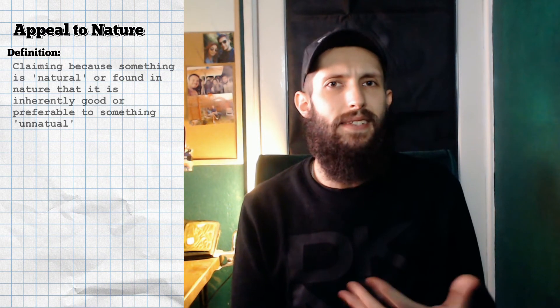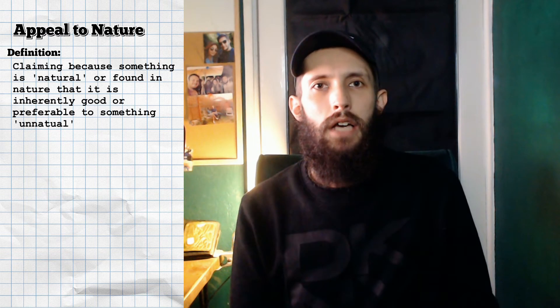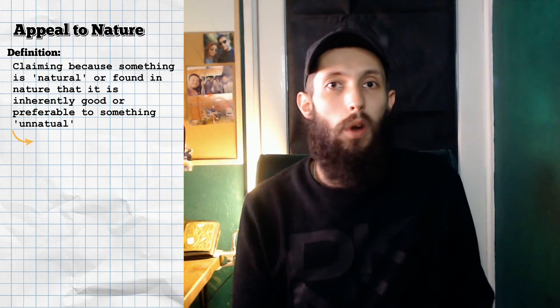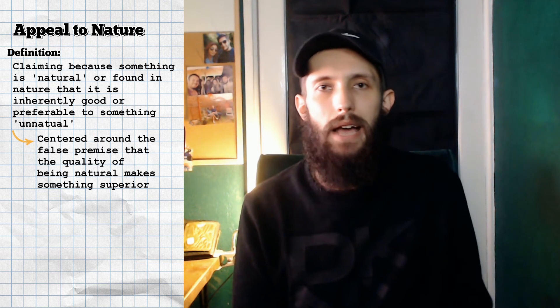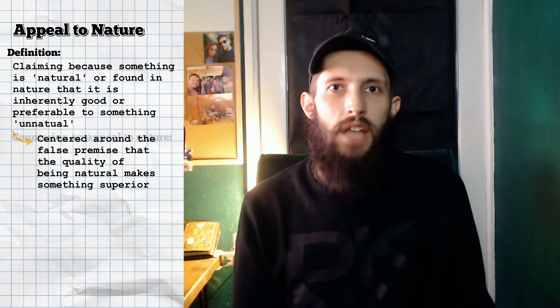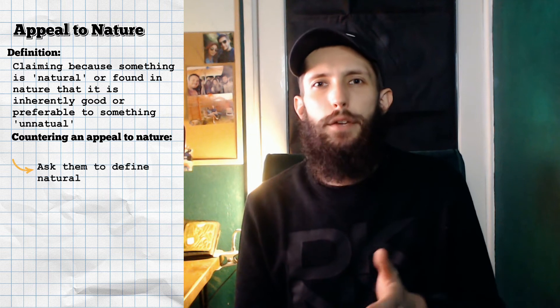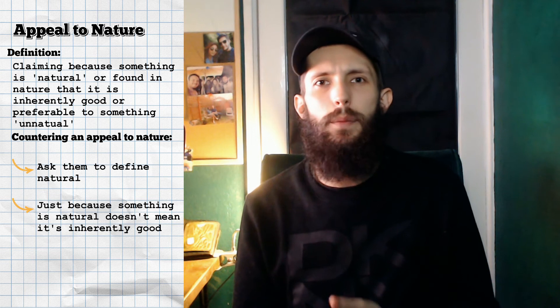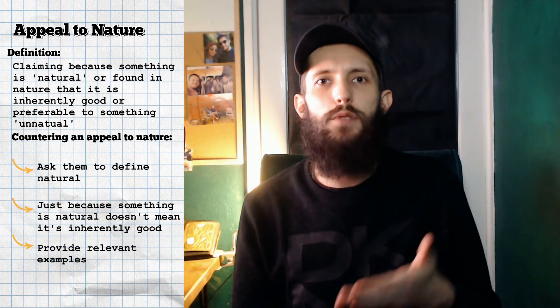An appeal to nature is a fallacy whereby an individual cites that because something is natural or found in nature, it is preferable or inherently good. These arguments are centred around the false premise that the quality of something being natural automatically means it is necessarily better than something unnatural. To counter these arguments, you could ask the person to define what 'natural' actually means, or point out that it is incorrect to assume that just because something is natural it is by definition inherently good — and ideally provide some relevant examples.